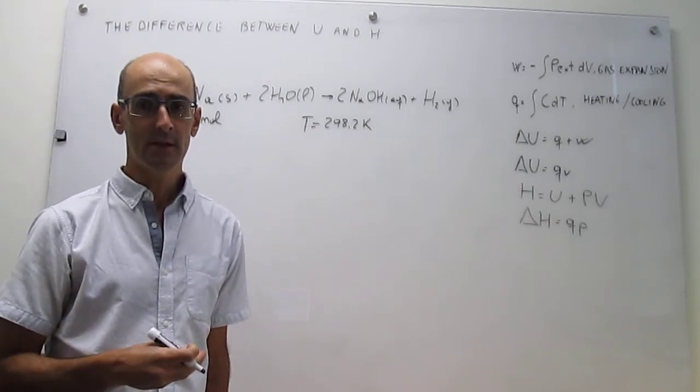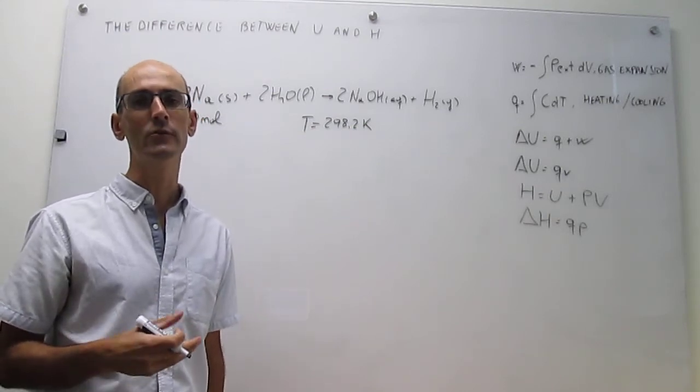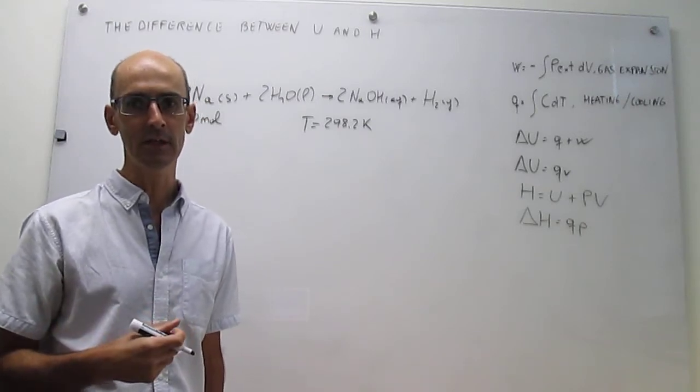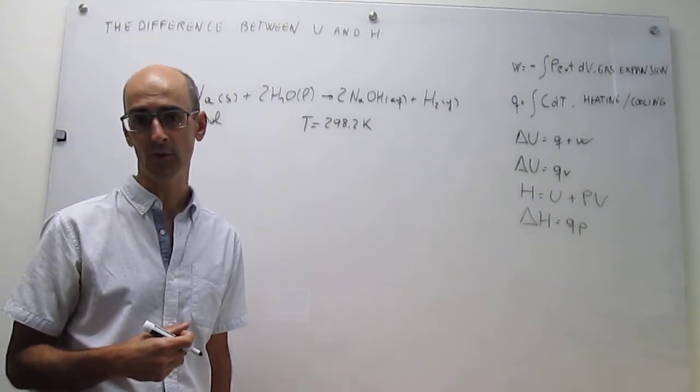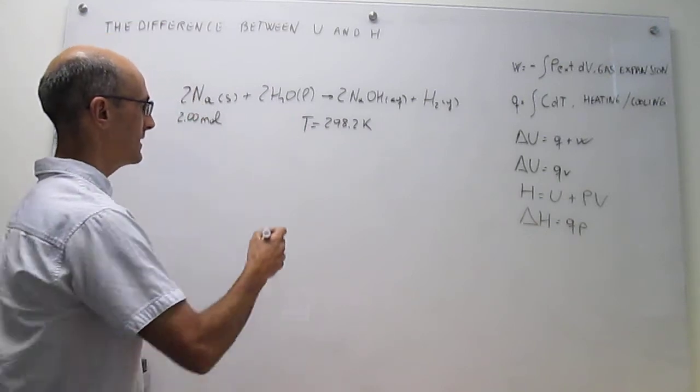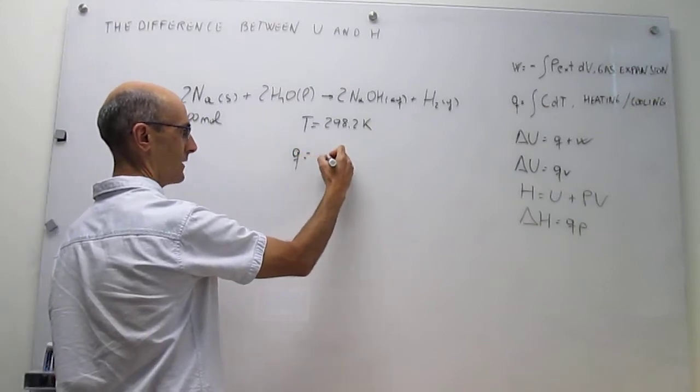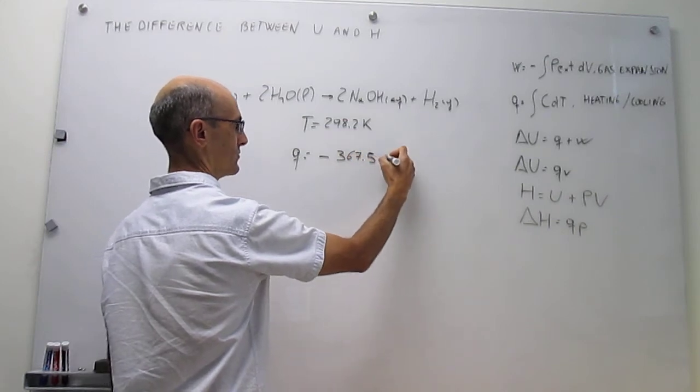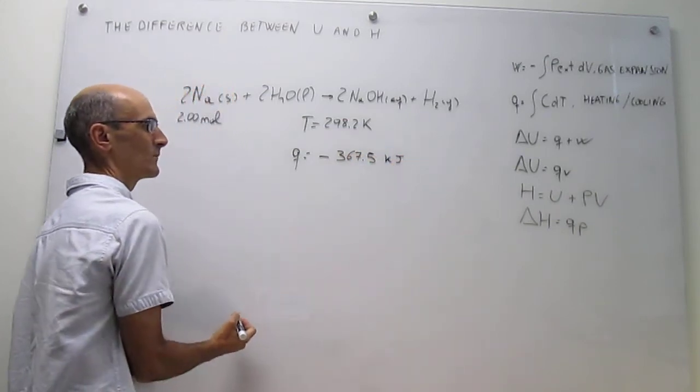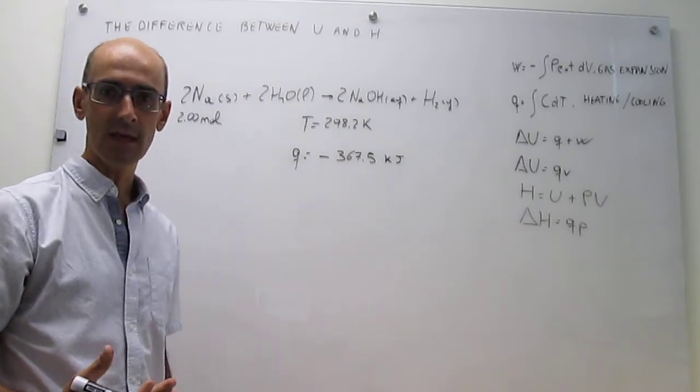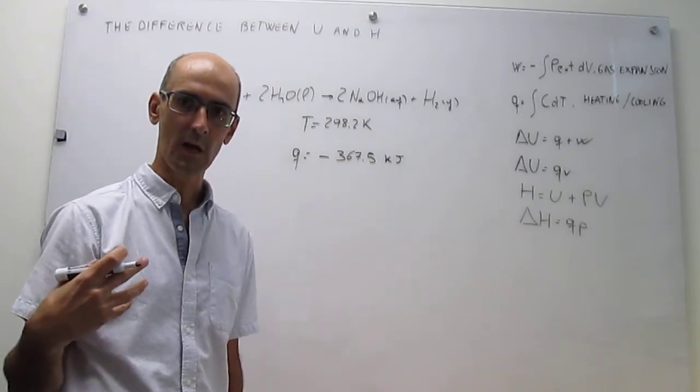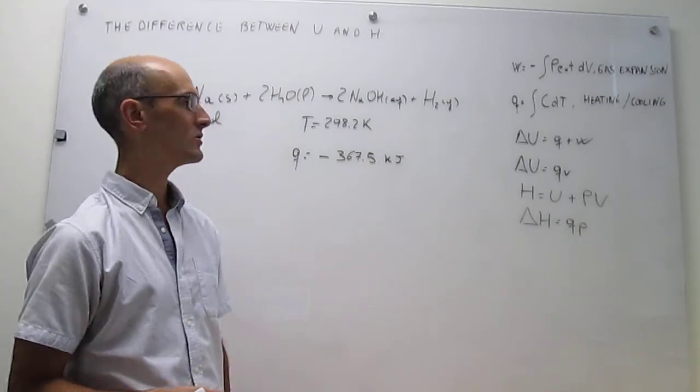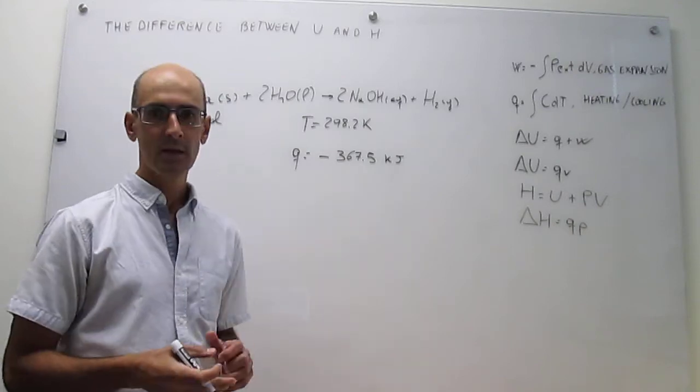The measurement that we are executing here to try to figure out what enthalpy and internal energy are is the amount of energy released as heat or transferred as heat. And that Q, which can be measured, happens to be minus 367.5 kJ. It is negative, meaning the reaction is exothermic. Energy is liberated in the reaction and ends up in the surroundings.